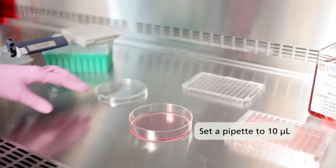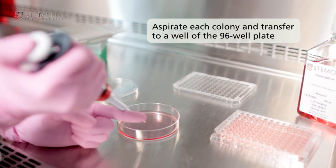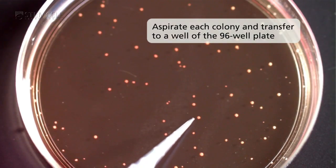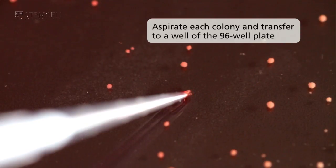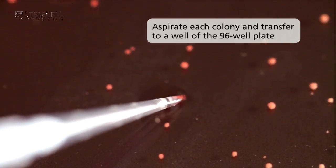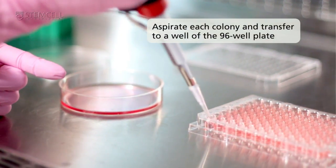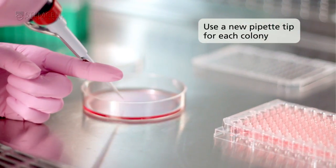Set a pipette to 10 microliters. Using a sterile pipette tip, aspirate each colony. Transfer it to a well of a 96 well plate. Use a new pipette tip for each colony.